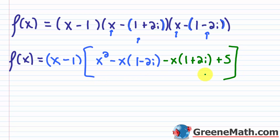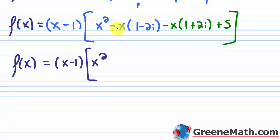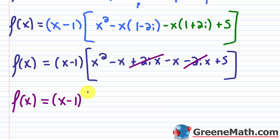Now simplifying inside the brackets: x squared, then negative x times 1 is minus x, then negative x times negative 2i is plus 2ix. Then negative x times 1 is minus x, and negative x times 2i is negative 2ix. The imaginary terms cancel, and negative x minus x gives negative 2x. So inside the brackets we have x squared minus 2x plus 5.